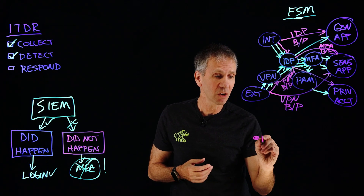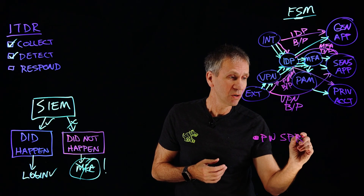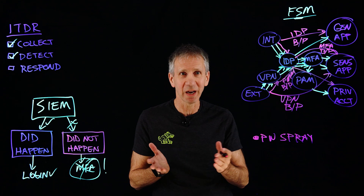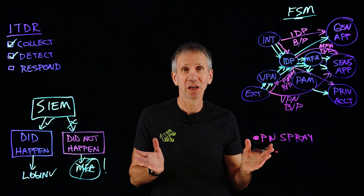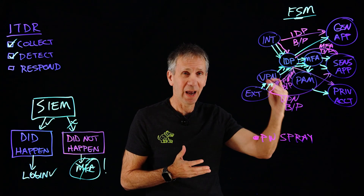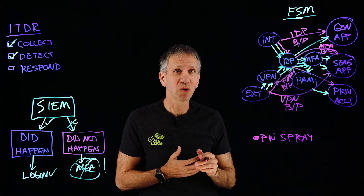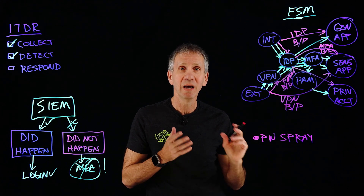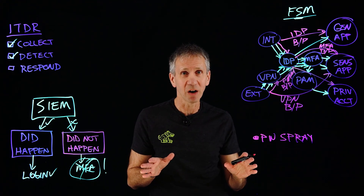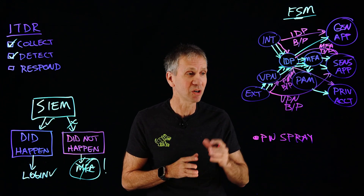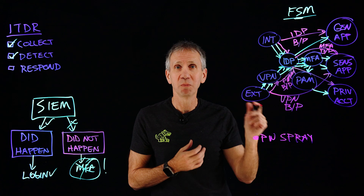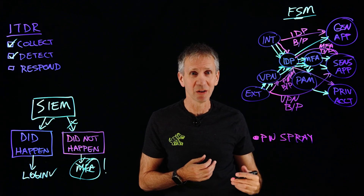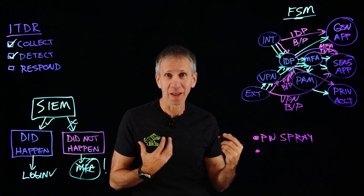Another detection scenario is a password spraying attack. Normally, if you try to log in with a bad password, you get three strikes before lockout. So attackers instead take one password and try it one time on many different accounts — flying slow and low below radar. A SIEM probably would not see it because each attempt looks like a single failed login. But an identity threat detection and response system would detect the frequency pattern of the same type of attempt hitting multiple accounts.